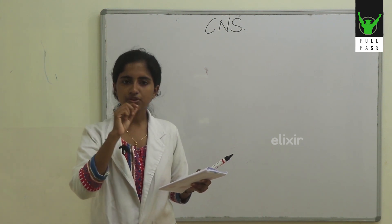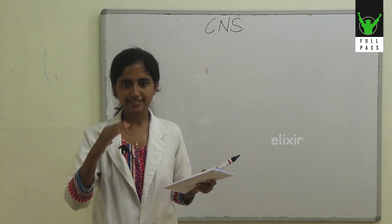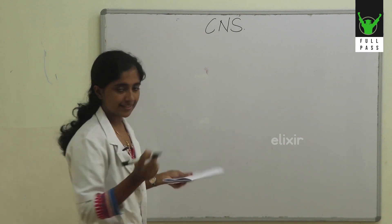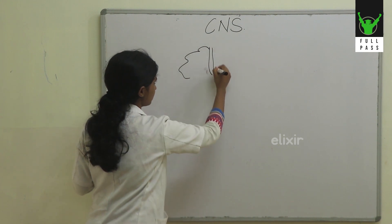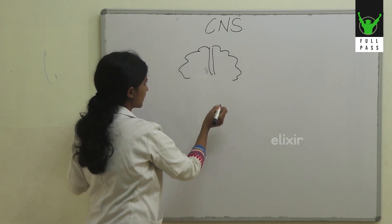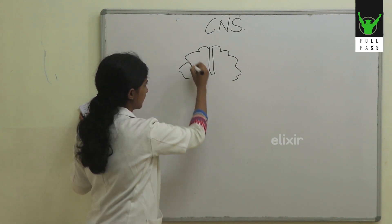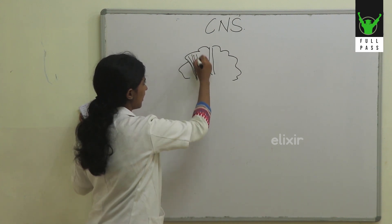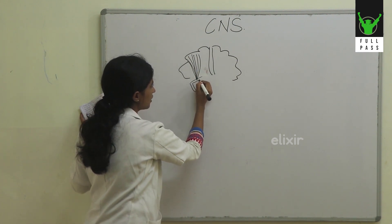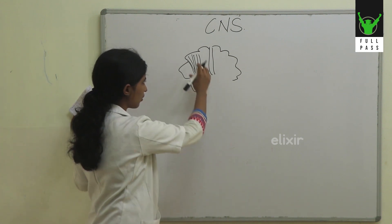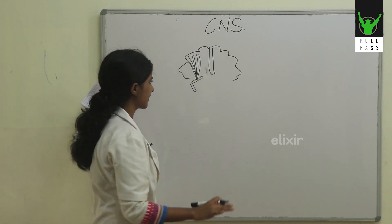These corticospinal tract and corticobulbar tract fibers descend down as corona radiata. These tracts take their origin from the cortex and then descend as a radiation, and then they pass through something known as the internal capsule. In the internal capsule, all these fibers converge and pass through the posterior limb of the internal capsule.